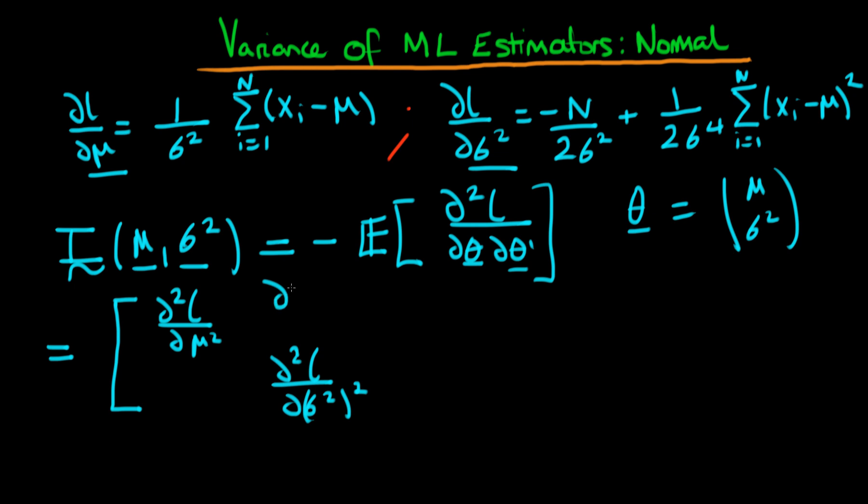The top right component is going to be D2L over D mu D sigma squared, and the bottom left component is going to be D2L over D sigma squared D mu.